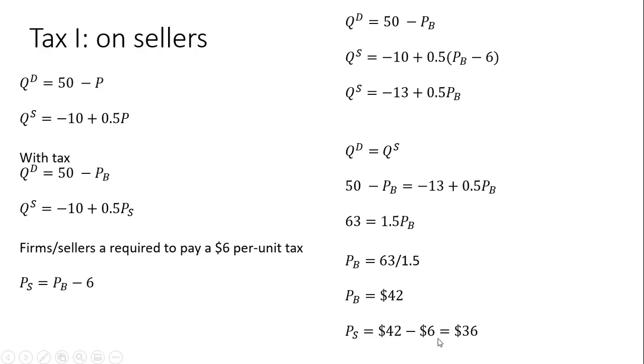And sellers are receiving $42 from the buyers. But then the sellers have to submit a $6 check to the government. So leaving sellers net with $36 for each unit sold. So we can see that sellers are worse off. They're receiving lower prices in a market that is taxed compared to one that is not taxed.